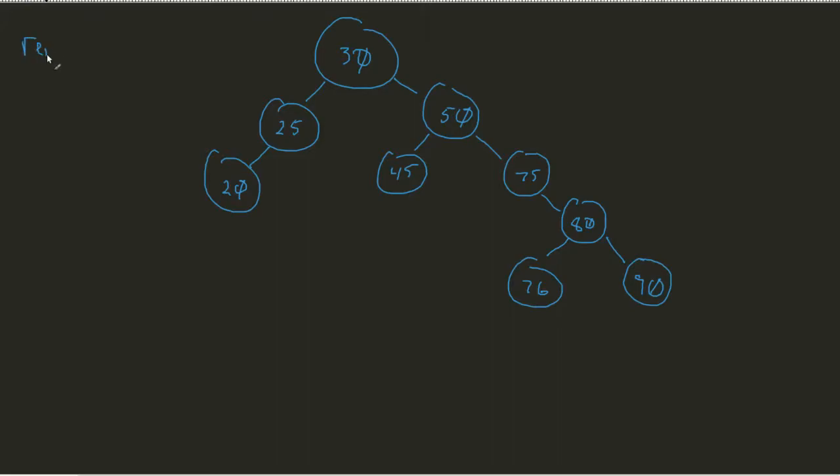So what if I wanted to attempt to remove a node that doesn't exist? In our case, I wanted to remove, say, for example, 46. Well, I would traverse my nodes just like before, and I would see that 45 has no 46.